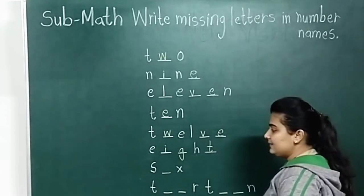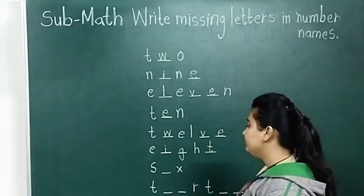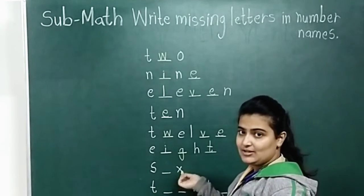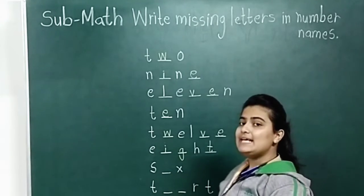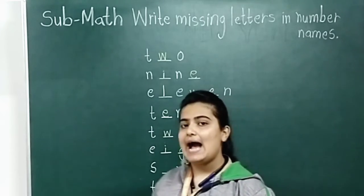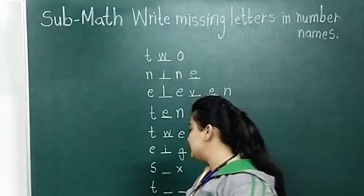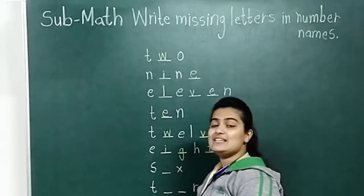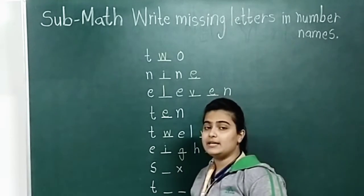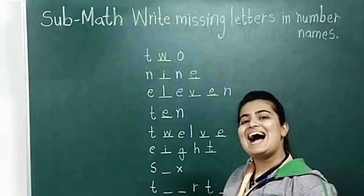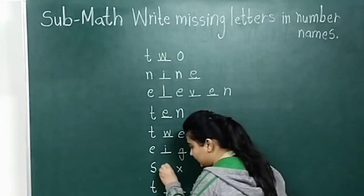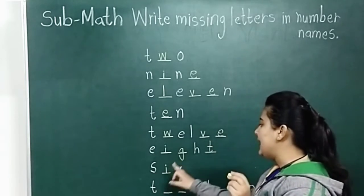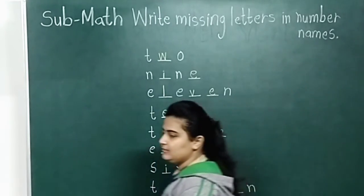Now next. S, dash, X. Which number name is this? Six. S and X are written, so which letter is missing? I. We write I. S, I, X — six.